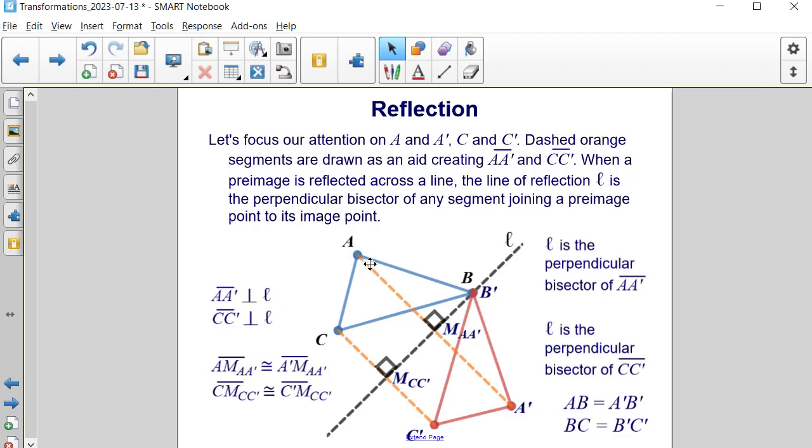So, we have that segment A to A prime is perpendicular to line L, and segment C to C prime is also perpendicular to L.